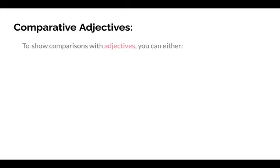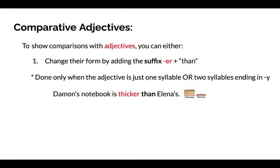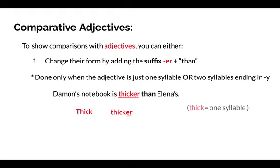Comparative adjectives. There are two ways to show comparisons with adjectives. You can either change their form by adding the suffix -er, plus adding the word than. This should be done only when the adjective is just one syllable or two syllables ending in Y. For example, Damon's notebook is thicker than Alina's. Thicker is the comparative adjective. The base adjective thick is just one syllable, so er is added to make the word thicker, and than is also added.